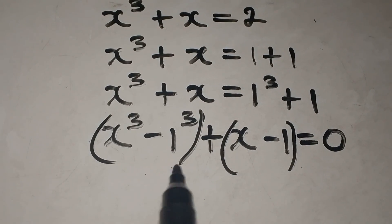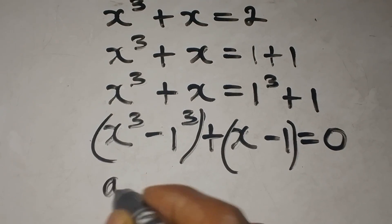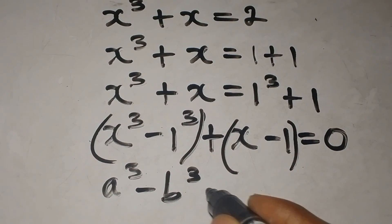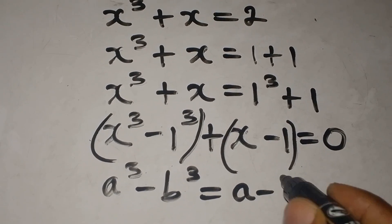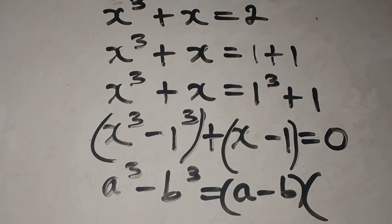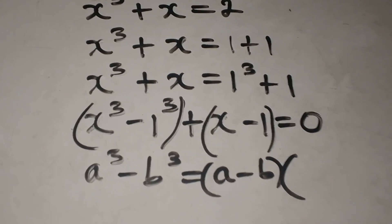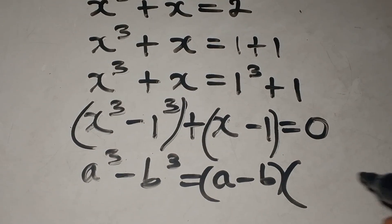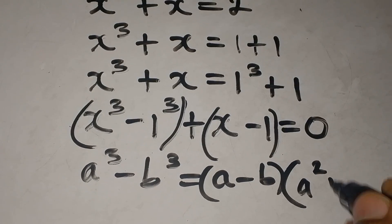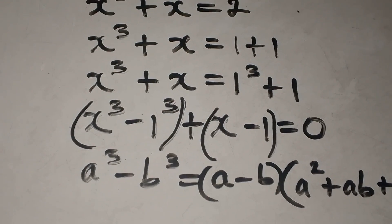Here we have the difference of two cubes. The identity is: a to the power of 3 minus b to the power of 3 equals a minus b, times a squared plus ab plus b squared.